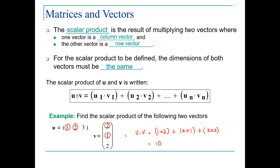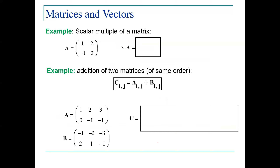We can also multiply a scalar by a matrix. For example, if A is the square matrix [1, 2; -1, 0] and we multiply by 3, we multiply that scalar by each element in the matrix, giving [3, 6; -3, 0]. That's the scalar multiple of that matrix.